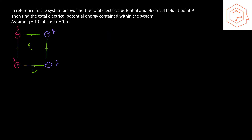Now for an example: we have a system and we're told to find the electrical potential and electrical field at point p, which is the center of a square, and also the total electrical potential energy of the entire system. The corners of the square are charges of magnitude q = 1 microcoulomb, and the side lengths are all 2r where r = 1 meter, so side lengths are 2 meters.